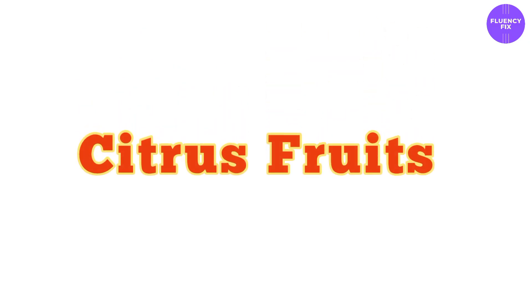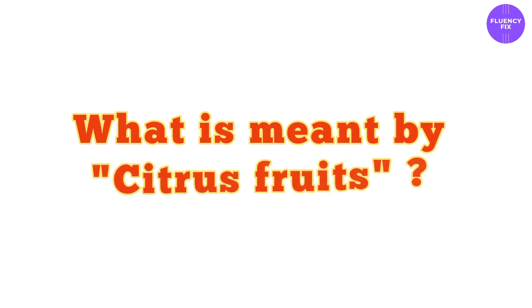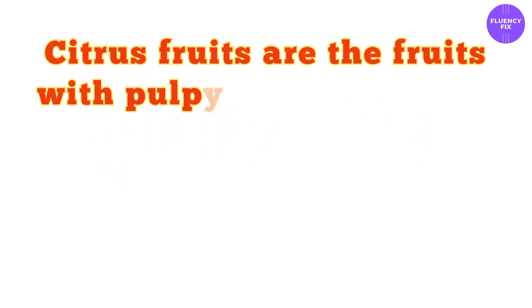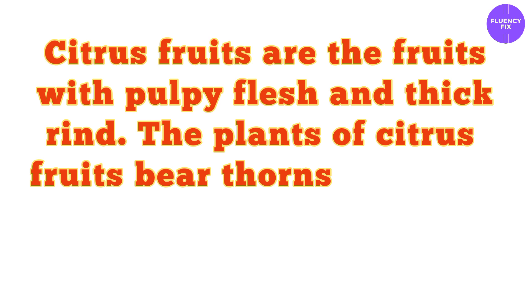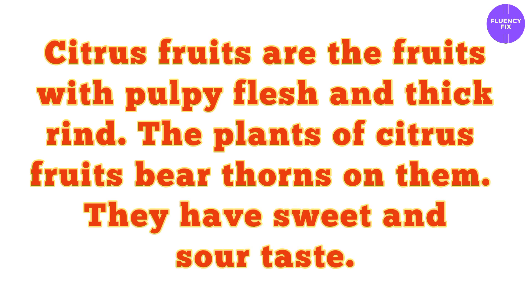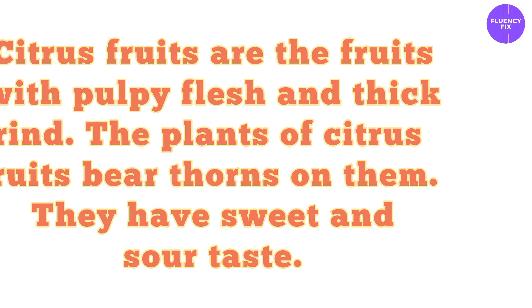In this video we are going to learn English vocabulary for citrus fruits. First let's understand what is meant by citrus fruits. Citrus fruits are the fruits with pulpy flesh and thick rind. The plants of citrus fruits bear thorns on them. They have sweet and sour taste. Let's see examples of citrus fruits.